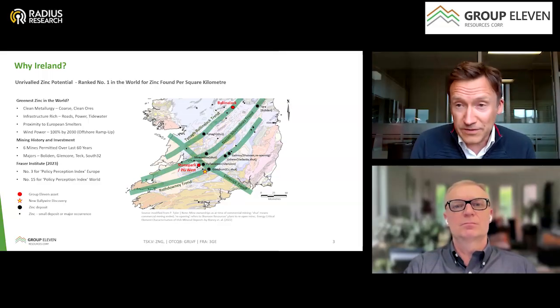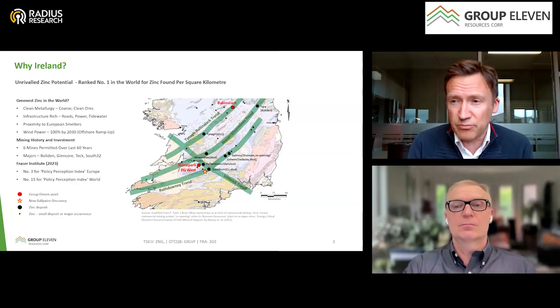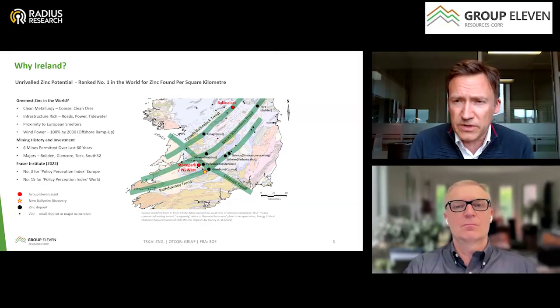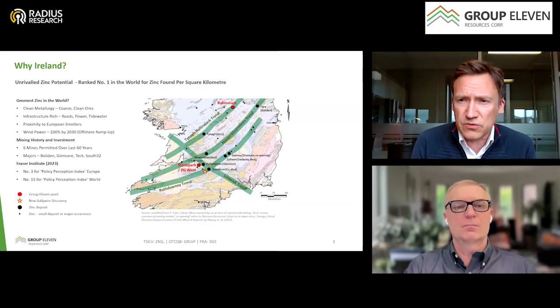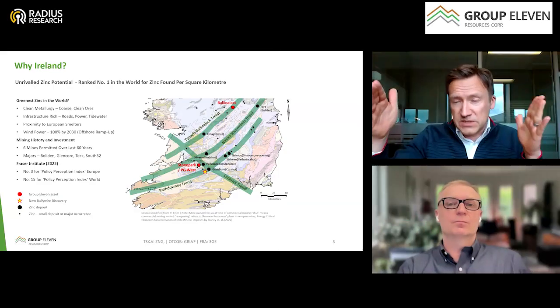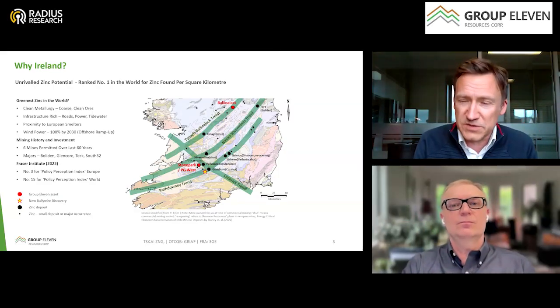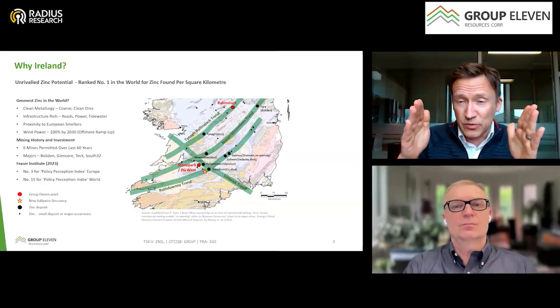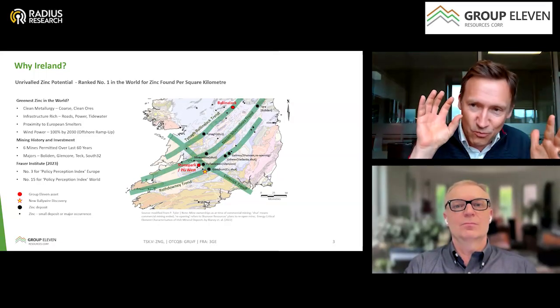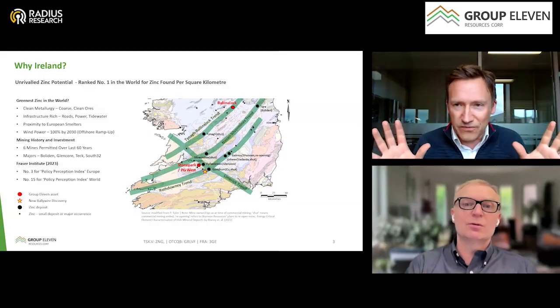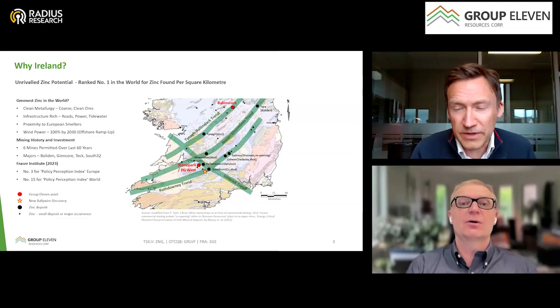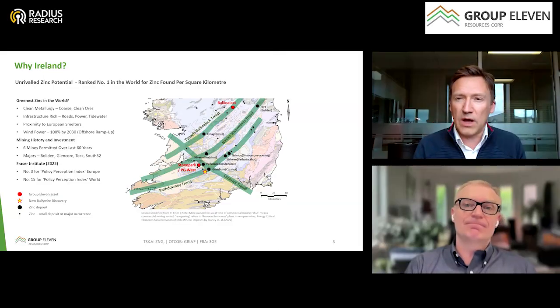It was a 50-meter step-out and increased our strike length from 1,250 meters to 1,300 meters along what is already a 2.6 kilometer long trend of very robust mineralization. That 2.6 kilometers is along a six kilometer prospective trend defined by four gravity high anomalies, of which only one has been drilled to date. You're only halfway through the trend, or really one out of four gravity anomalies has been systematically drilled.